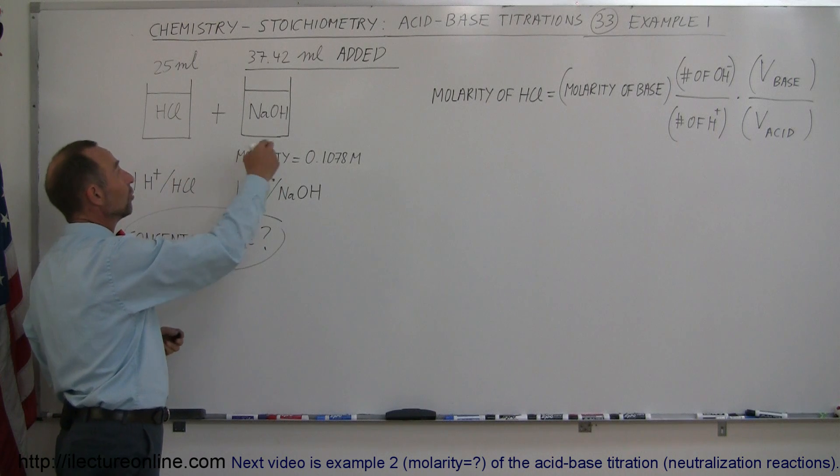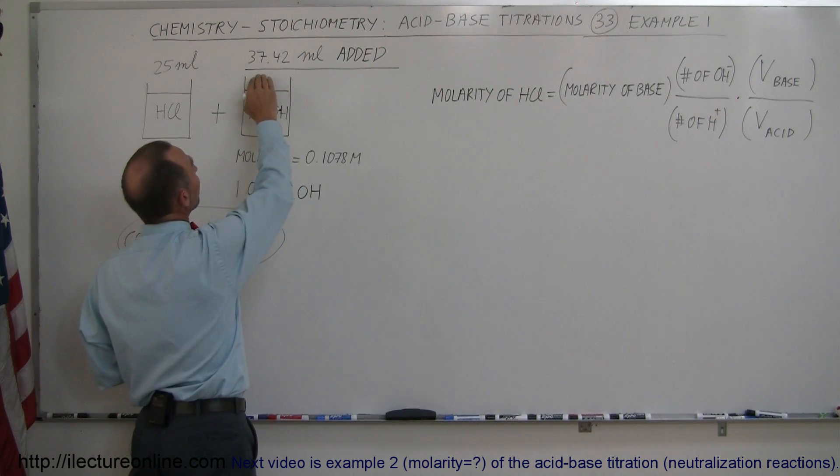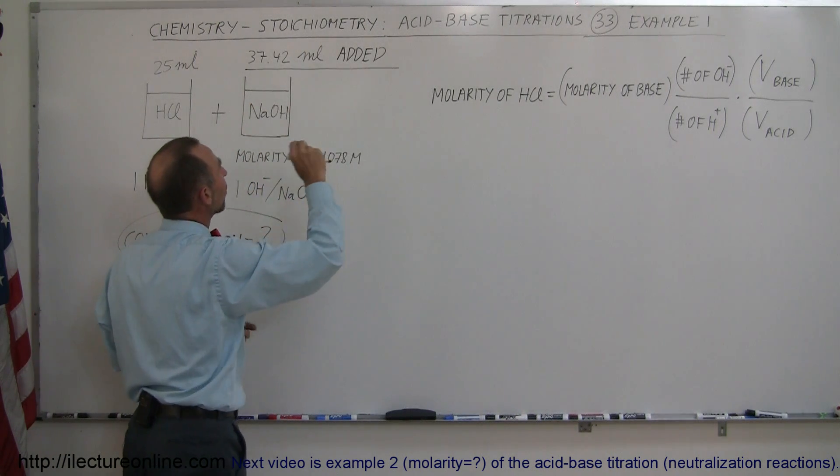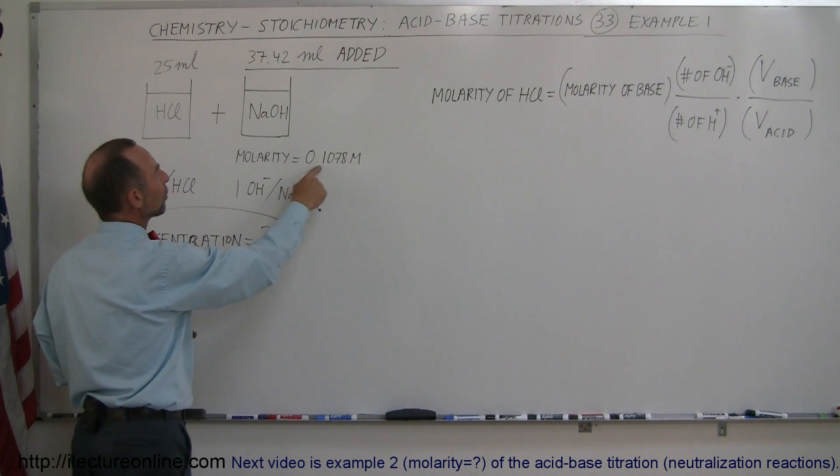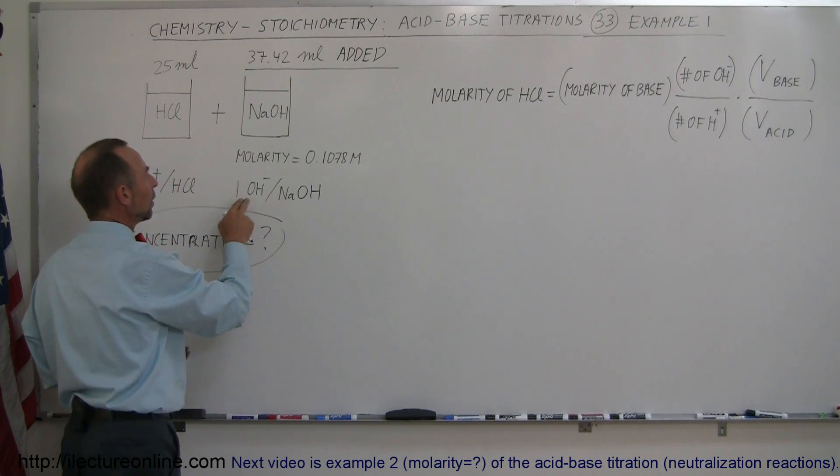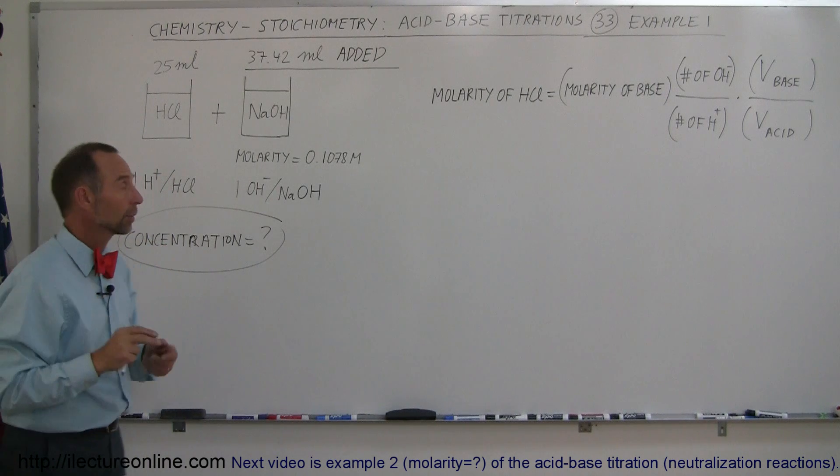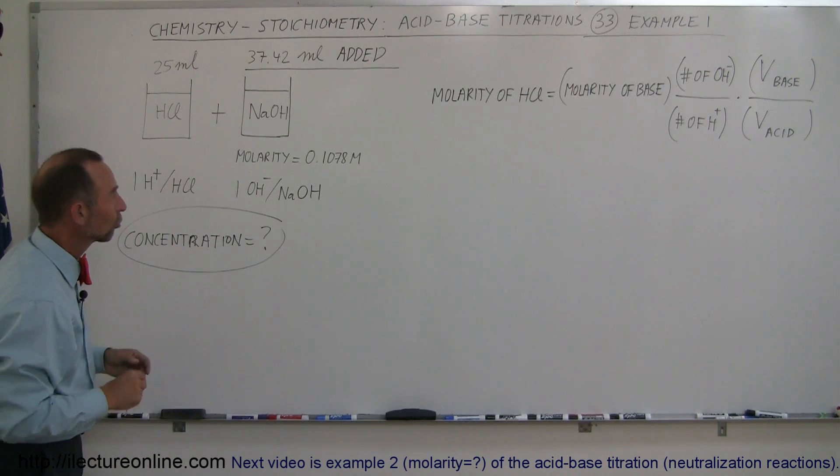We're going to add a base to it, and it turns out in this example, we added 37.42 milliliters of sodium hydroxide that has a molarity of 0.1078 moles per liter. And of course, again, we have one hydroxide ion for every sodium hydroxide molecule that we have in the solution.